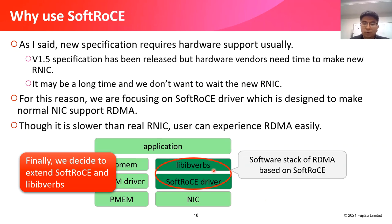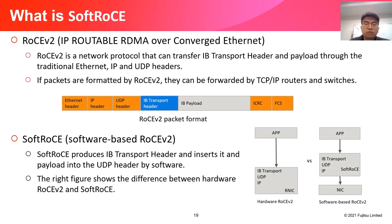This figure shows the software stack of RDMA based on soft RoCE. What is soft RoCE? We need to know RoCE v2 first. RoCE v2 — IP Routable RDMA over Converged Ethernet — is a network protocol that transfers IB transport headers and payload through traditional Ethernet, IP, and UDP headers. If packets are formatted by RoCE v2, they can be forwarded by TCP/IP routers and switches. Soft RoCE is software-based RoCE v2: it produces IB transport headers and inserts them with payload into the UDP header by software.